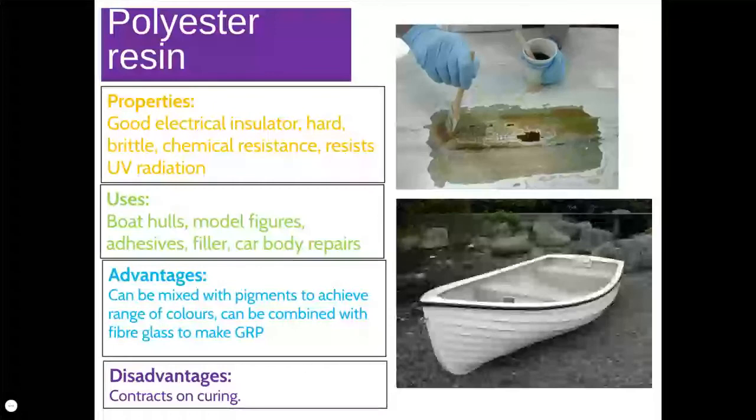Polyester resin is a thermosetting plastic. It is combined with glass fibres to create glass-reinforced plastic (GRP), which can be used for boat hulls, car body repairs, and filler. Polyester resin on its own can also be used as a filler or adhesive. It's a fantastic material — a great electrical insulator, very hard, with great chemical resistance, waterproof, and it resists UV radiation really well.